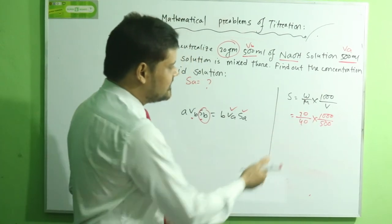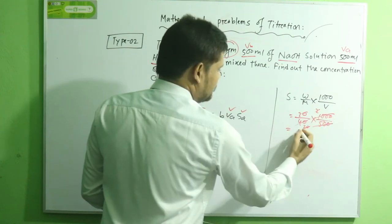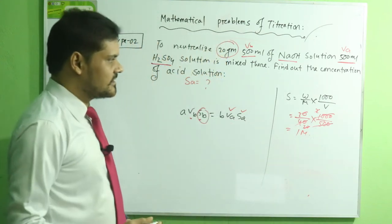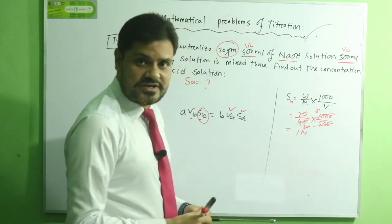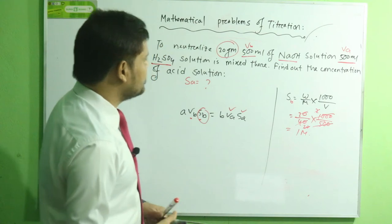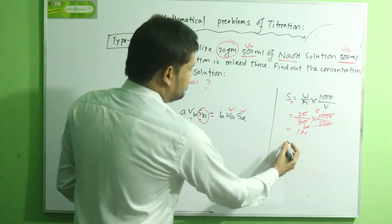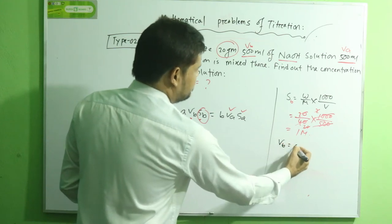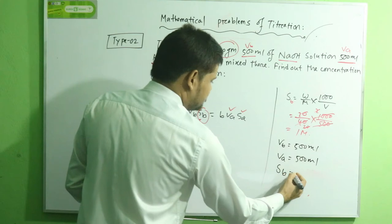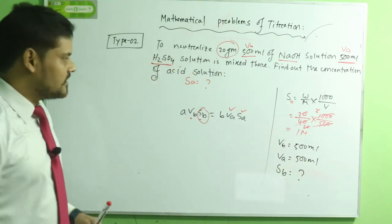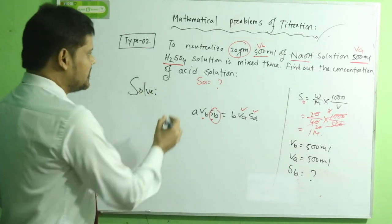Calculating: S = (20 / 40) × (1000 / 500) = 0.5 × 2 = 1 molar. So Sb = 1 molar for the sodium hydroxide solution. From the problem: Vb = 500 mL, Va = 500 mL, Sb = 1 molar (calculated), and Sa is the required value.